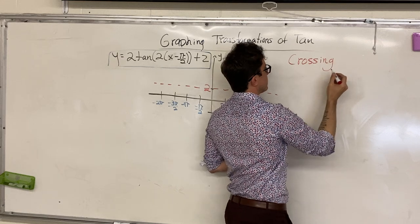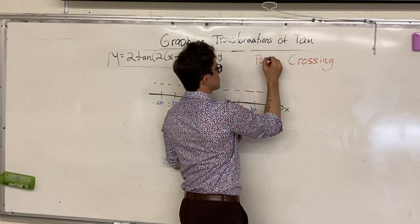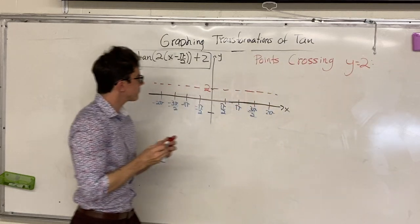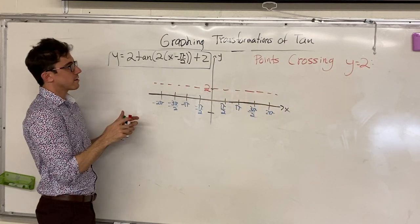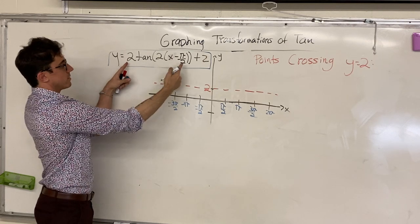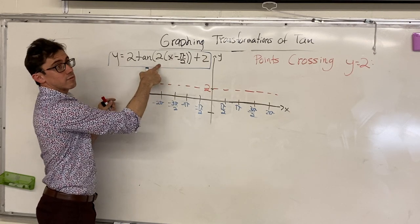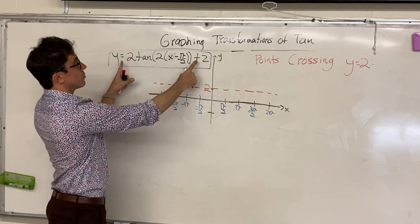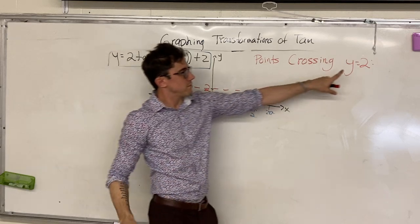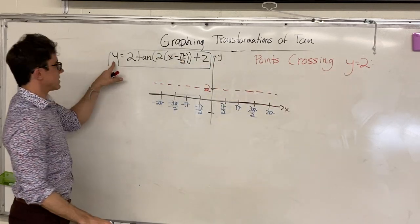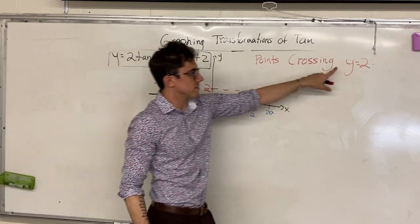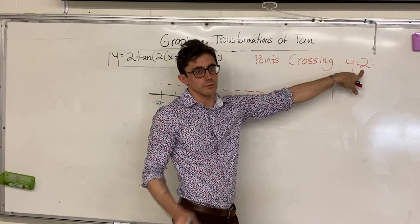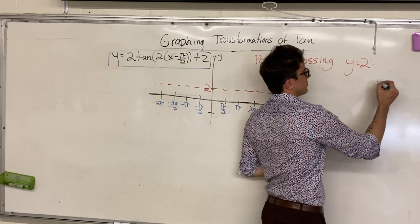So our new zeros are going to be the points where we cross this line y is equal to 2. This is our new sinusoidal axis — the analogy to the tan function. Those points crossing the line y equals 2 are going to happen whenever this part of our function is equal to 0. Because if this entire term is equal to 0, then 0 plus 2 gives us a y value of 2. At all of those points we get smack down on the line y equals 2.